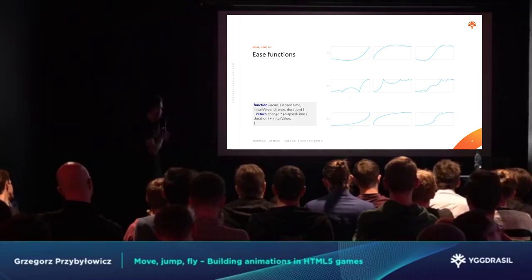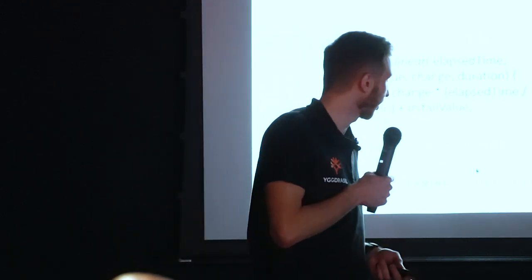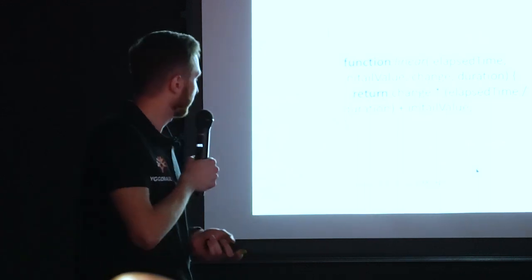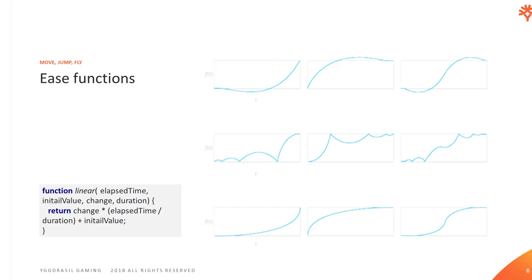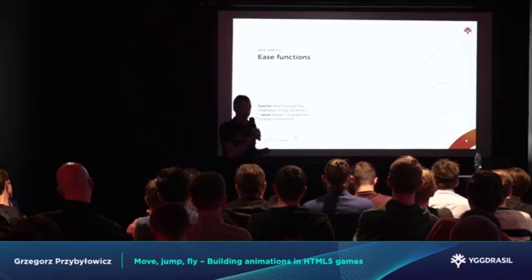Easing functions are just mathematical formulas which can be applied to animation. They take elapsed time, initial value, change, and total time of animation, and produce an output that depends mostly on the time. As you can see on the chart, the x-axis represents time and the y-axis is value. So we can very easily produce deceleration, acceleration, even a bounce effect — at the beginning of the animation, at the end, or both. This is how we can simply boost your animations and give them a nice feeling.